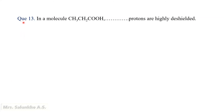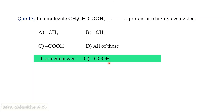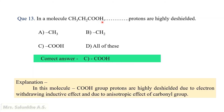Question 13: In the molecule CH3CH2COOH, which protons are highly deshielded? Options: methyl group protons, methylene group protons, COOH group protons, or all of these. The correct answer is COOH group protons. This is because the hydrogen in COOH is attached to an electronegative oxygen atom, and due to the electron-withdrawing inductive effect, the OH proton is highly deshielded. This is also due to the anisotropic effect of the carbonyl group. Thus, the COOH group proton requires less magnetic field strength to come under resonance.